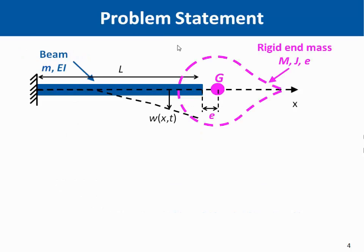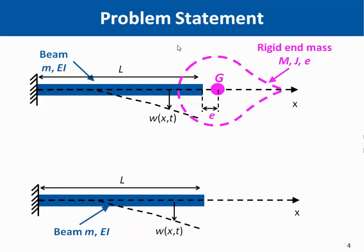Here is the problem statement of this work. We have a beam with a rigid mass of arbitrary shape, and what we want to do is replace this arbitrary shape with an effective point mass at the end, accounting for both the translational mass, the rotational inertia, and the eccentricity. We assume the beam is elastic, prismatic, and monolithic with the end mass. We also assume the end mass is rigid, and we only consider eccentricity on the horizontal axis.